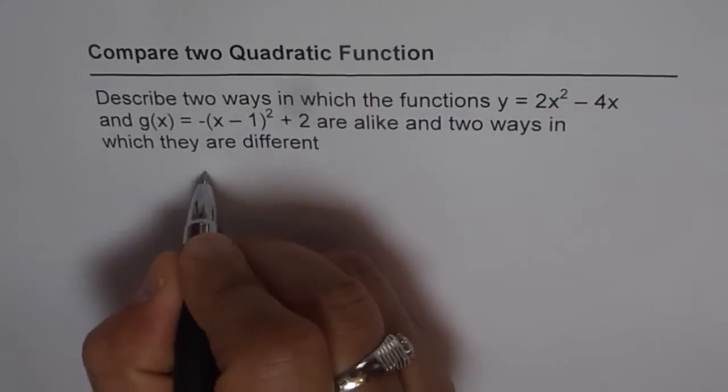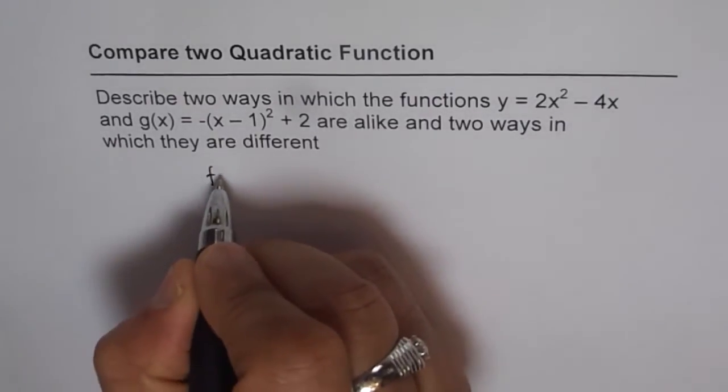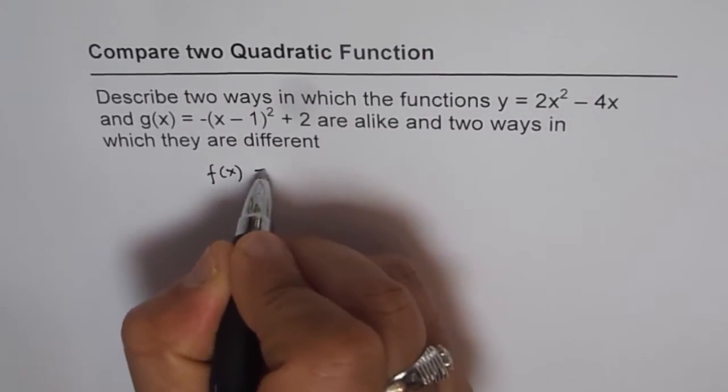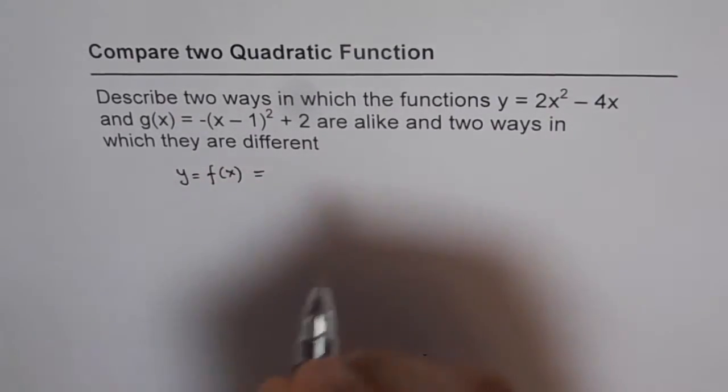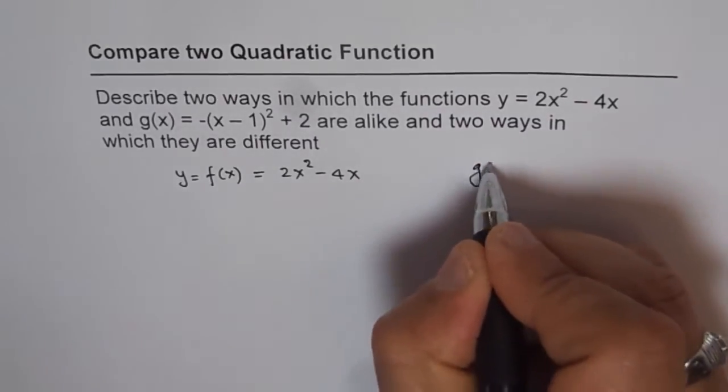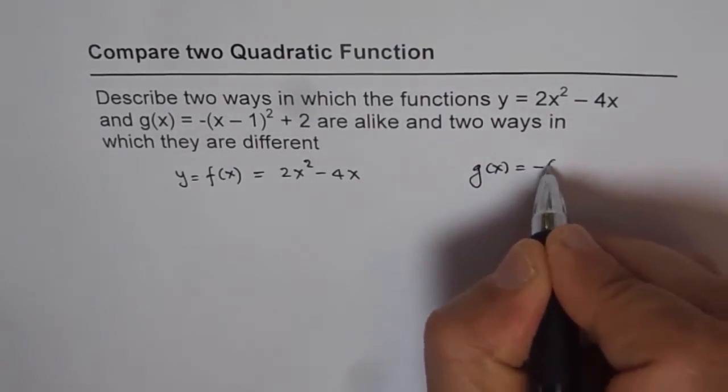So let's consider these two functions and find out their similarities and differences. We are given y equals, let me write that as f(x) equals 2x squared minus 4x and we are given g(x) equals minus (x minus 1) whole squared plus 2.